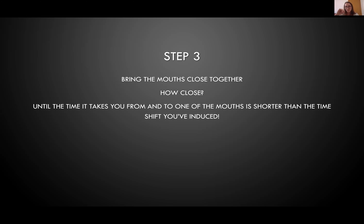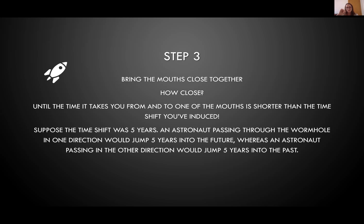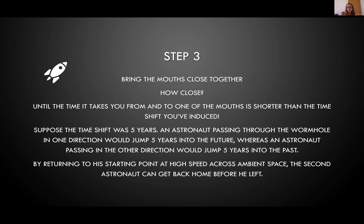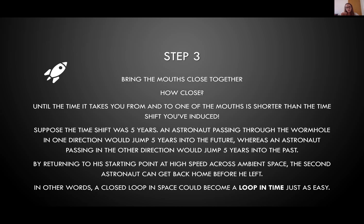For example, suppose the time shift is five years. An astronaut passing through the wormhole in one direction jumps five years into the future. Another astronaut going in the opposite direction jumps five years into the past. If that second astronaut returns to the starting point fast enough by walking over to the other mouth in ambient space, they get back home before they even left. A closed loop in space becomes a loop in time.